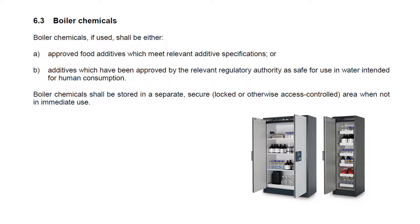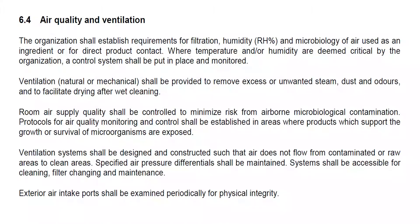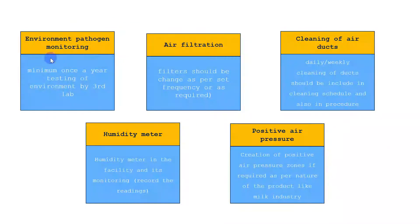Now let's go to sub-clause 6.4, which is air quality and ventilation. Rather than reading all the text, I have made bullet points. The first point is environmental pathogen monitoring — a minimum of once-a-year testing of the environment by a third-party lab is required. The second is air filtration — filters should be changed at a set frequency, and this frequency should be defined in your SOP and followed.